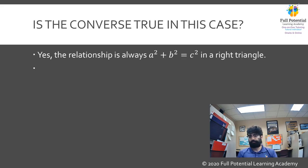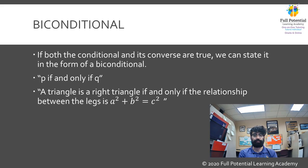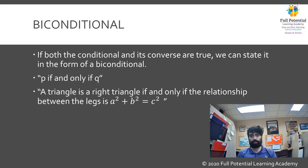Ask yourself: is the converse statement strictly and necessarily true? In this case, the answer is yes. Right triangles always have this relationship between the legs and the hypotenuse, and likewise, when a triangle's sides have this relationship, it must necessarily be true. If both a conditional statement and its converse are true, then the statements can also be expressed as a biconditional — p if and only if q. In the case of this example, a triangle is a right triangle if and only if the relationship between the legs is a squared plus b squared equals c squared.